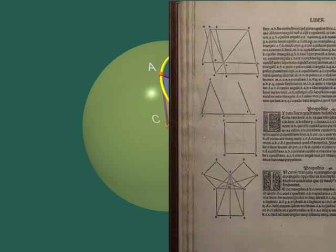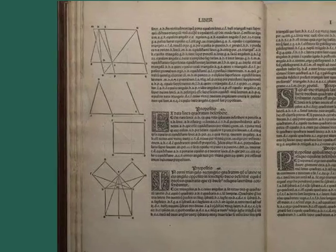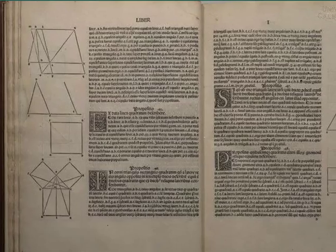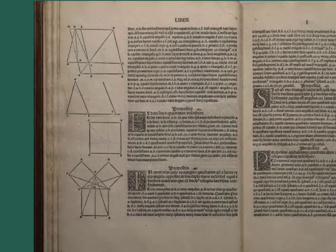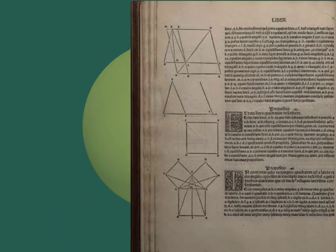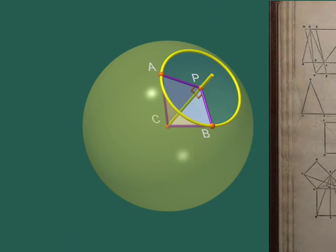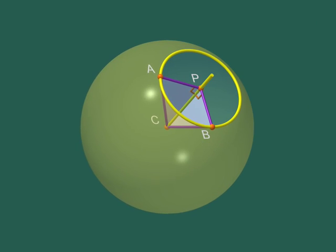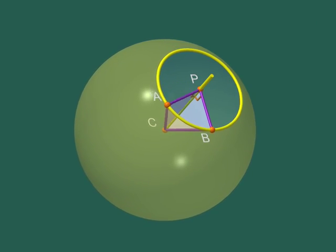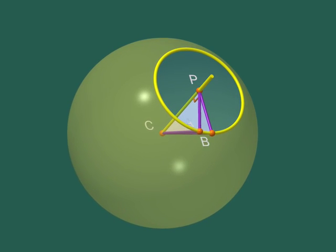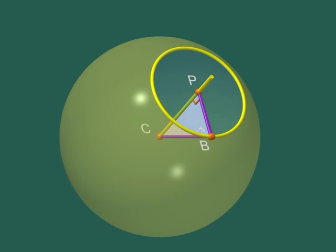But remember Pythagoras' theorem. Since our two right angle triangles have two sides of the same length, their three sides must have the same length. Hence, we have proved that PA and PB have the same length, that is, that A and B are on the same circle with centre P, in the blue plane.